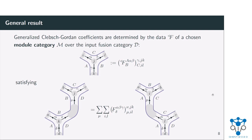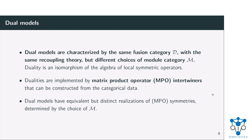This is actually the story in complete generality. If you now consider the most general kind of symmetry and the most general kind of duality in 1+1 dimensions, you can obtain it in this way. The generalized Clebsch-Gordan coefficients — the different solutions to this recoupling condition — are classified by what's known as a module category over this input fusion category D. Module categories are just the different consistent solutions to this equation, and they give you the different ways in which you can realize the same algebra of operators. A duality is an isomorphism of this algebra of local symmetric operators — dualities are just different realizations of this same algebra of local operators.